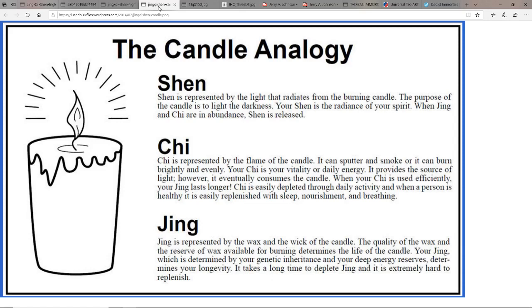There's a candle analogy that's used often where jing is represented, if we're looking at a candle, by the wax and the wick of the candle. The quality of the wax and the reserve of the wax available for burning determines the life of the candle.